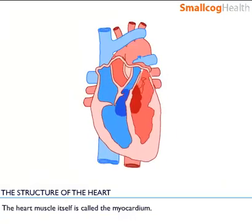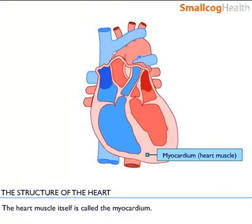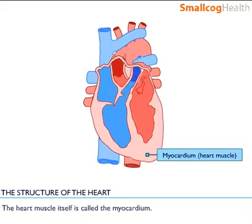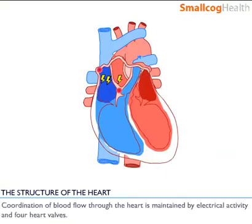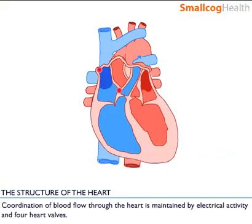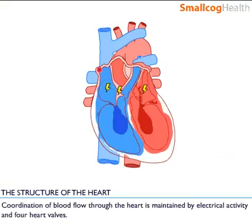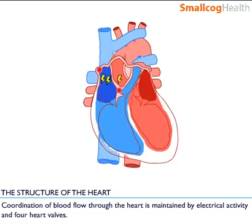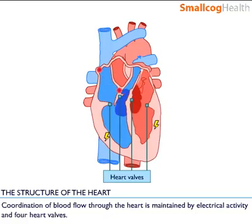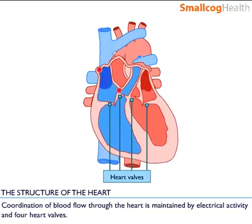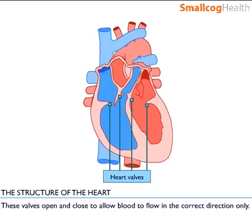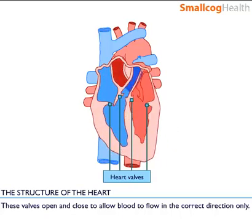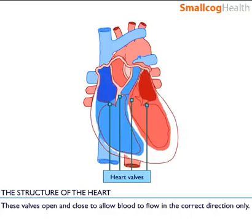The heart muscle itself is called the myocardium. Coordination of blood flow through the heart is maintained by electrical activity and four heart valves. These valves open and close to allow blood to flow in the correct direction only.